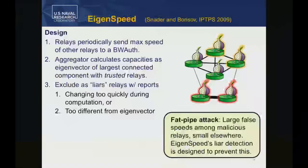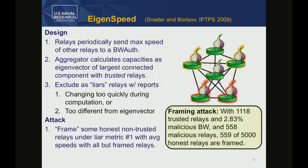These features were designed to solve the 'fat pipe attack,' where malicious relays pretend to have very fast measurements among themselves but send slowly to everyone else. This may well solve that specific problem, but there are other things an adversary could do. We show a couple of effective attacks, including one we call the framing attack.